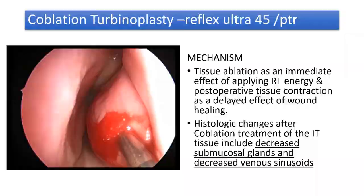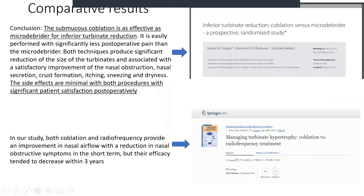A paper comparing inferior turbinate reduction with coblation versus microdebrider — a prospective randomized trial — found that submucosal coblation is as effective as microdebrider for inferior turbinate reduction, with minimal side effects for both and significant patient satisfaction rates. Another paper from the European Archives comparing coblation versus radiofrequency found both techniques improve nasal airflow well in the short term.